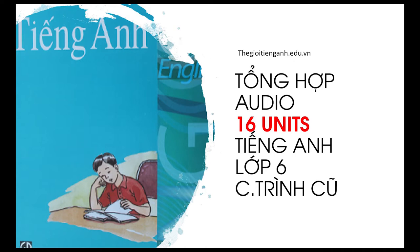Section B: My Routine. Listen and read. Hi, I'm Ba. I get up at six. I take a shower. I eat a big breakfast. I go to school at quarter to seven. I have classes from seven to quarter past eleven. At half past eleven I have lunch. In the afternoon I play games. I go home at five o'clock. In the evening I watch television and do my homework. I go to bed at ten o'clock.